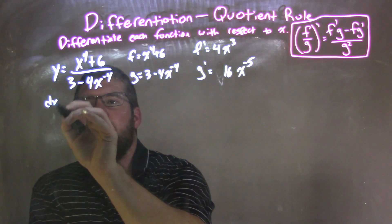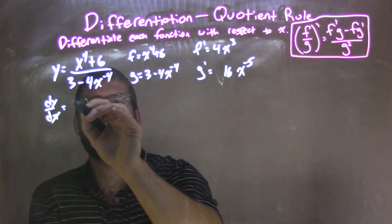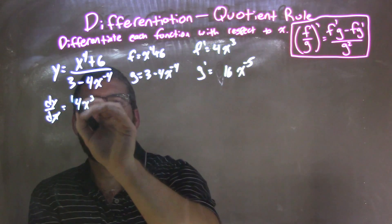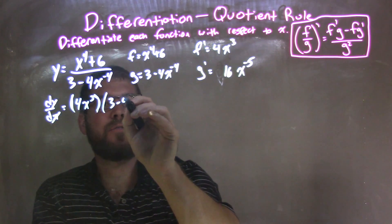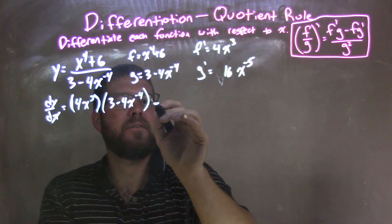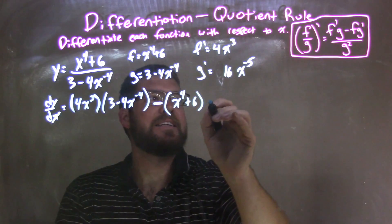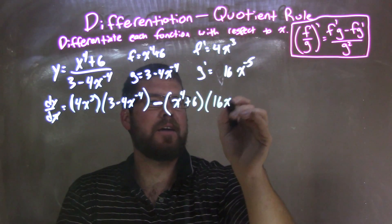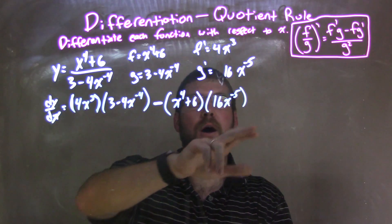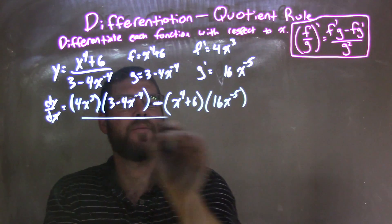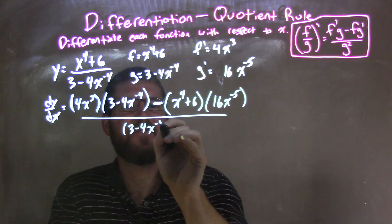So now we apply the quotient rule: dy/dx. f prime comes first — 4x to the 3rd — times g, which is 3 minus 4x to the negative 4th power, minus f, which is x to the 4th plus 6, times g prime, which is 16x to the negative 5th. Don't forget the bottom part — put it all over g squared, which is 3 minus 4x to the negative 4th power, squared.